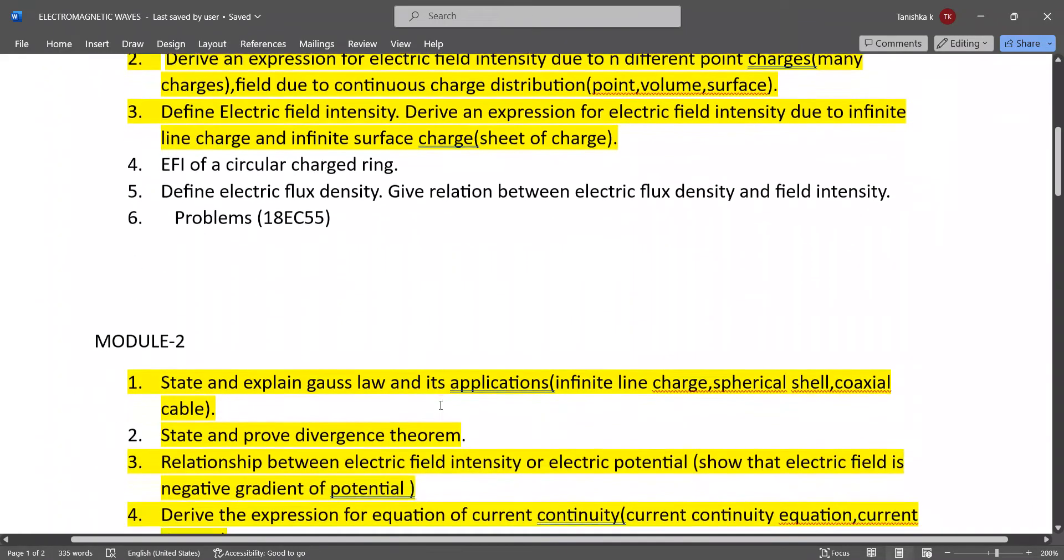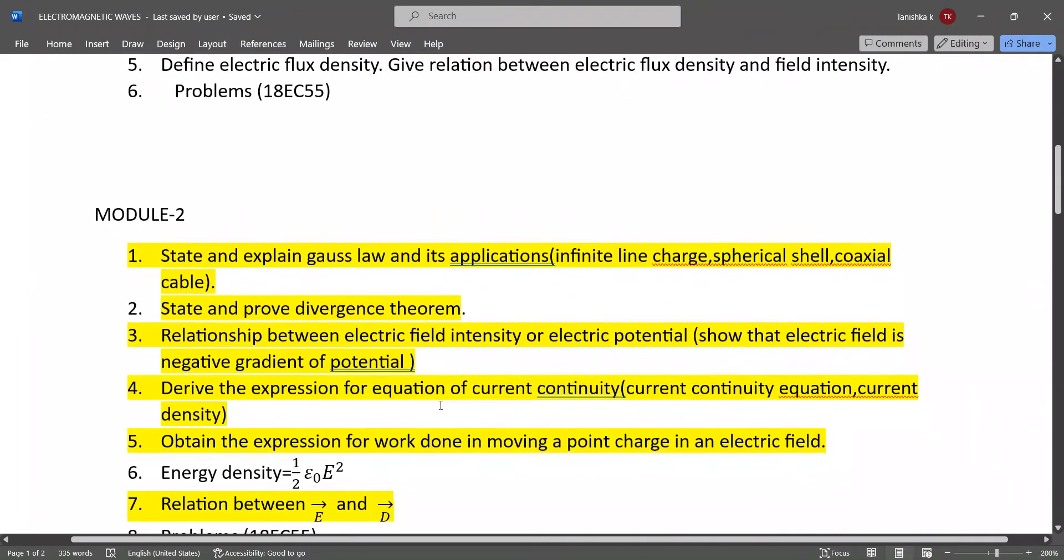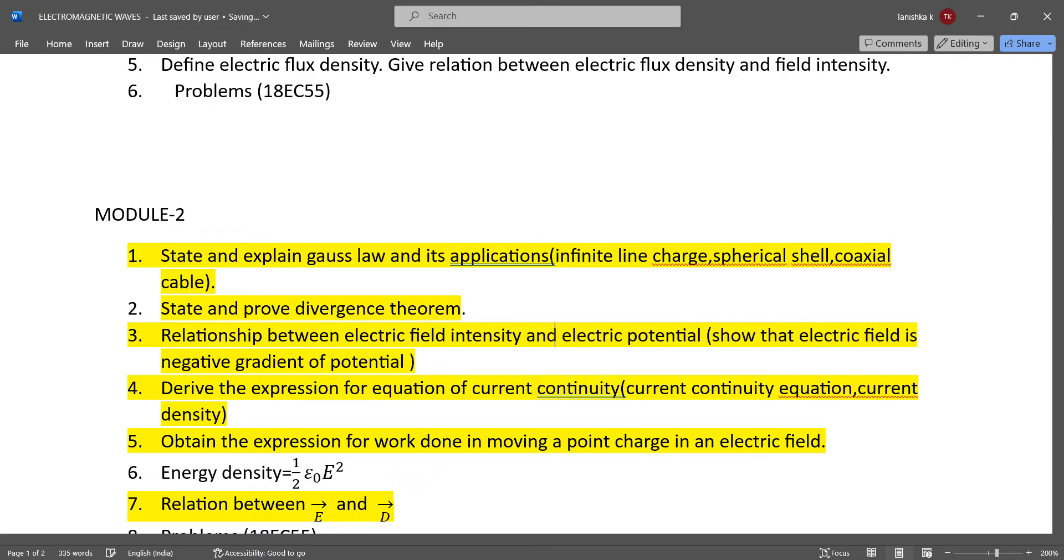Module 2 important questions: State and explain Gauss law and its applications like infinite line charge, spherical shell, coaxial cable. State and prove divergence theorem. Relationship between electric field intensity and electric potential, or show that electric field is negative gradient of potential. This question can be asked in two ways.